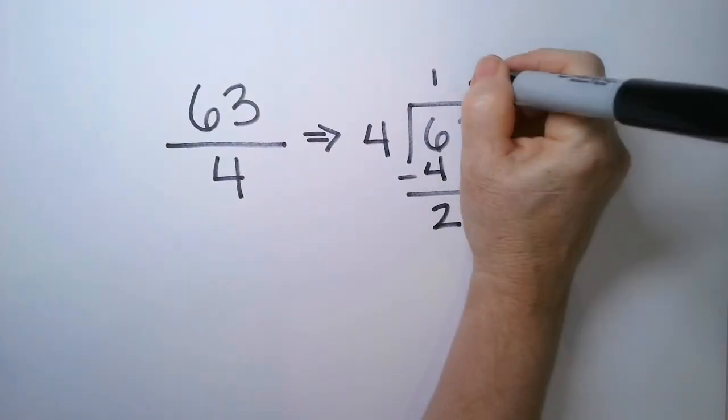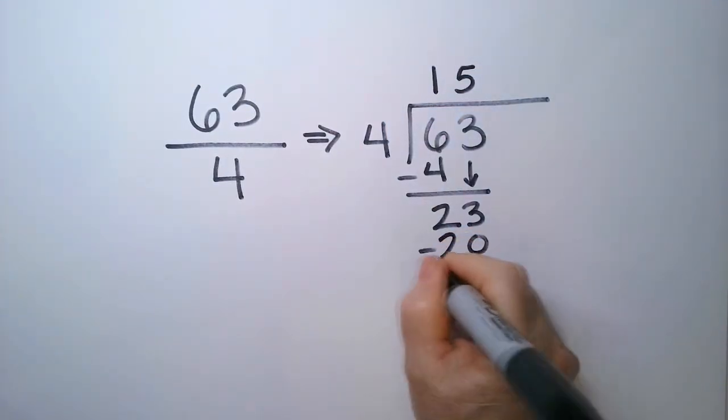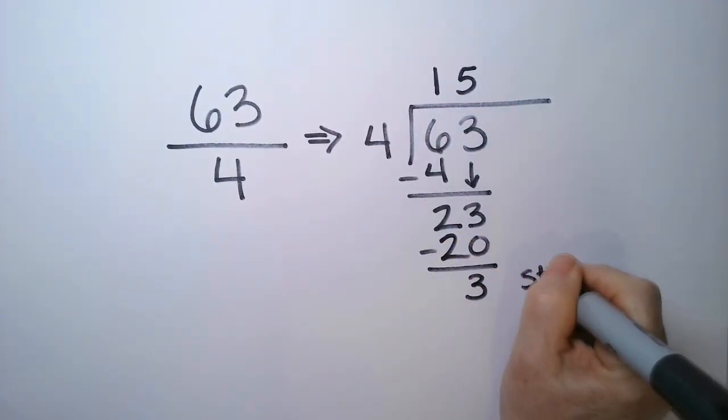4 goes into 6 one time, and we have a difference of 2. Bring down the 3. It almost goes in 6 times, but not really. So we have a 5. 5 times 4 is 20. Take the difference, and we have a 3. And that's where I want you to stop.